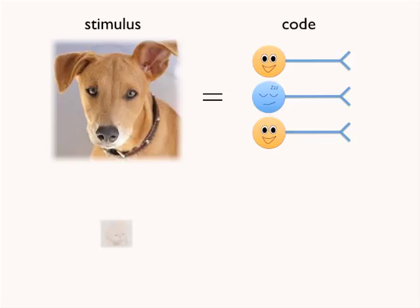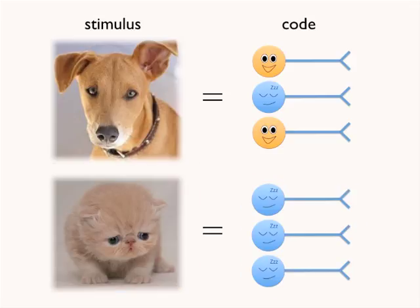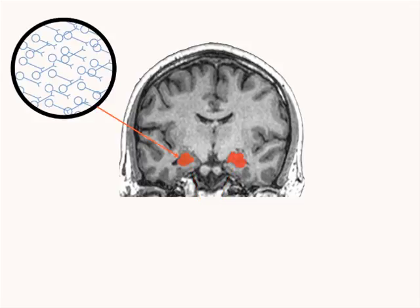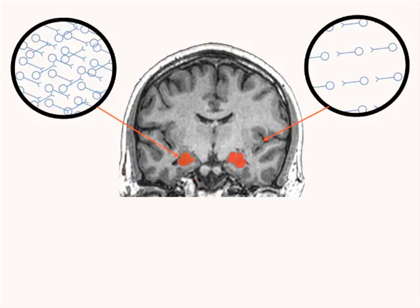When you see a different stimulus, like a kitty cat, a specific pattern of neurons is activated. The same neurons are used, but a different neuronal pattern is generated. The region of the brain that creates this neuronal patterning is called the hippocampus. It's a bilateral structure, meaning there are two lobes — one on each side of the brain. The density of neurons in this region is much greater compared to other regions, which is important because it allows for the complicated and intense processing needed to generate individual codes for different experiences.